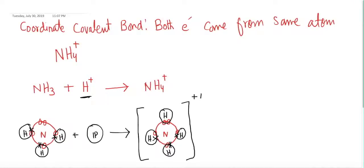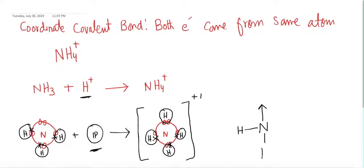The whole molecule gets a charge of plus one because NH3 is a neutral molecule and you are adding a positive charge into it, so the overall molecule is ionized and gets a plus one charge. In the NH4+ dot-and-cross model, the two electrons represented in red come from the same atom — nitrogen. Nitrogen is sharing both of its electrons with H+, so this is the coordinate covalent bond, represented with an arrow.